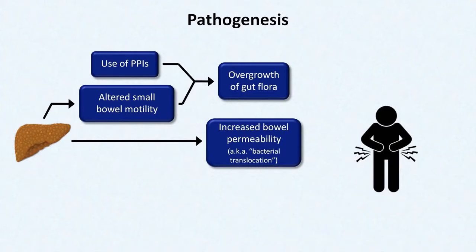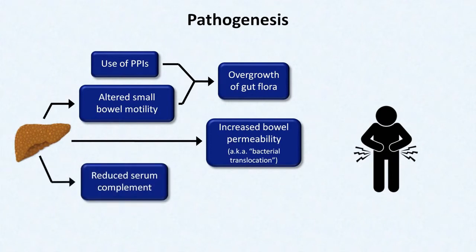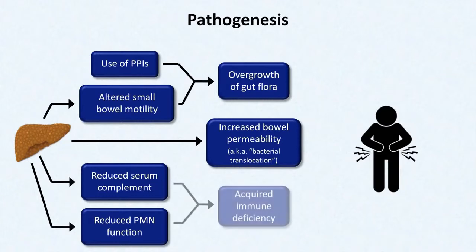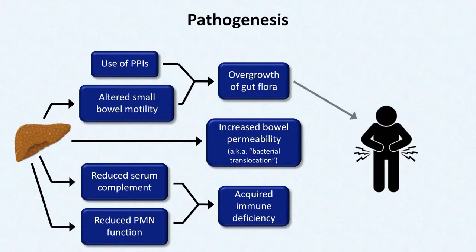Another major contributing factor to the development of SBP has to do with the cirrhotic liver's effect on the immune system. Since most complement is produced by the liver, cirrhosis predictably leads to decreased complement levels. Cirrhosis is also associated with a reduction in the function of polymorphonuclear cells. These together, likely with other minor immune problems, result in an acquired immune deficiency. So it's the combination of bacterial overgrowth in the gut, increased susceptibility to translocation, and an impaired immune system that ultimately leads to SBP.